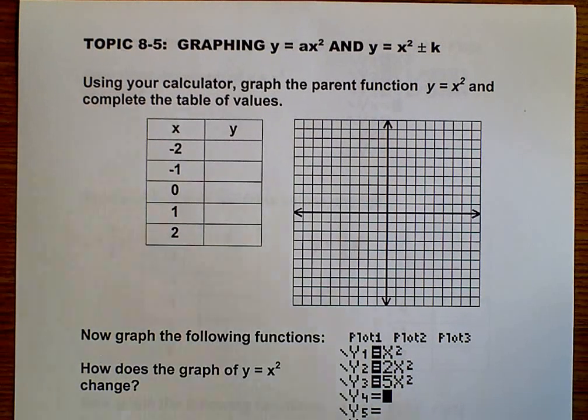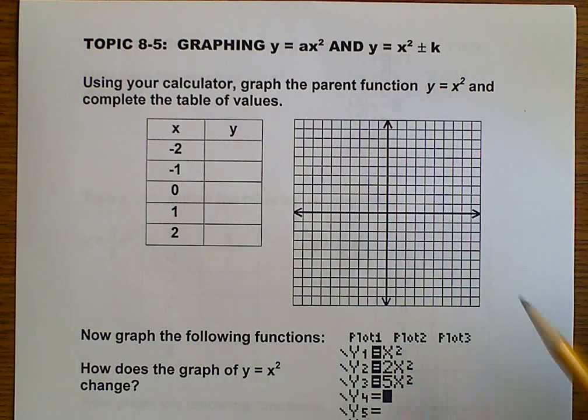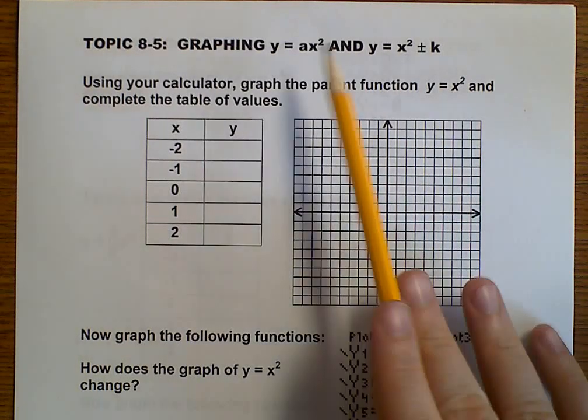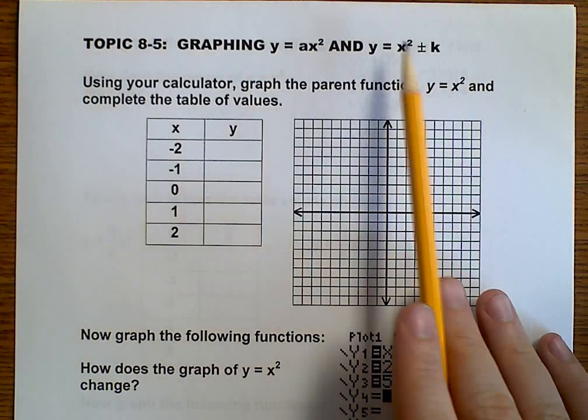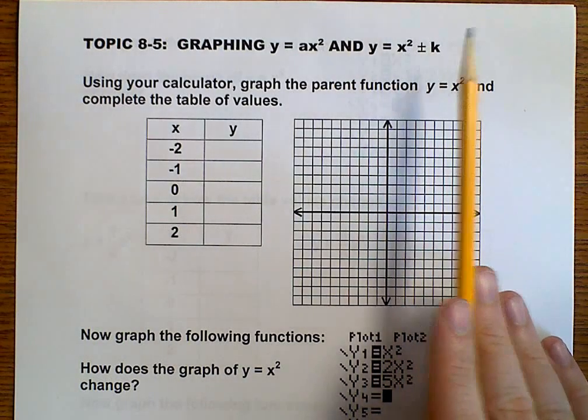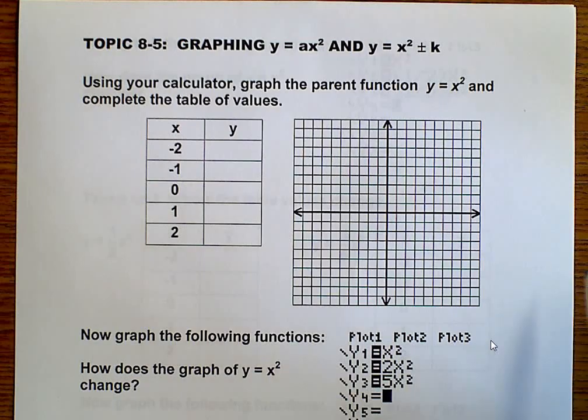Hello, this is Algebra 1, topic 8-5. We're going to be talking about how to graph special functions ax squared and y equals x squared plus or minus k. We're going to talk about some special situations which will change the basic parent function of y equals x squared.